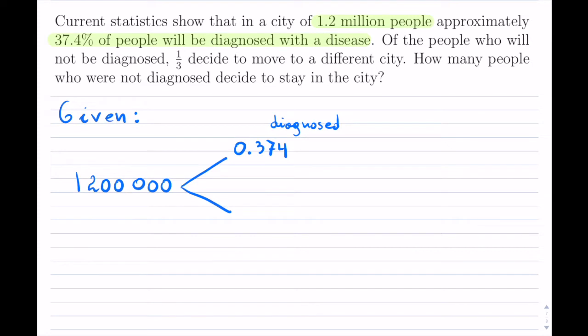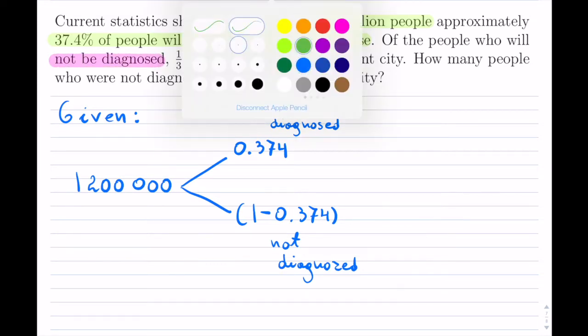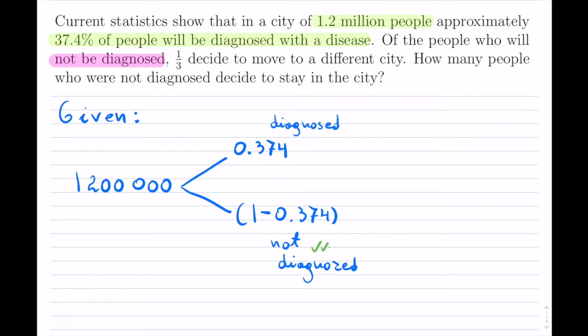And that means that I have 100% minus the 37.4% that are not diagnosed. So not diagnosed. Now they are saying, of the people who will not be diagnosed, so that is not diagnosed right here.